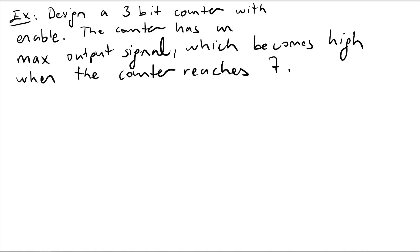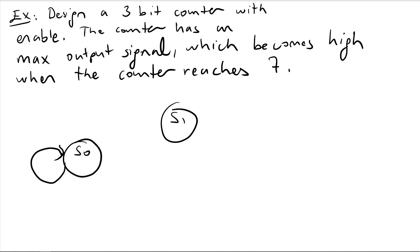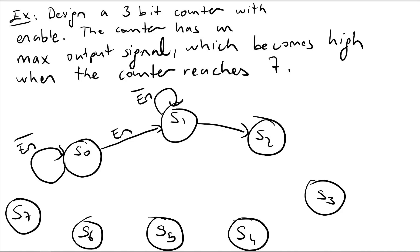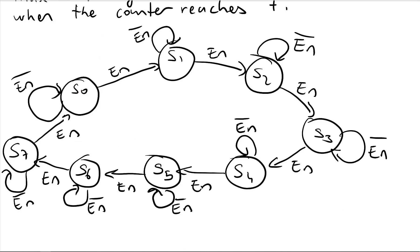Let's draw the state diagram. We have state s0 and s1. I have an enable signal — if I start from s0, if the enable is 0 I go back to s0; if the enable is 1 I go to s1. We also have s2, s3, s4, s5, s6, and s7. In all of these states, if the enable is 0 we stay on that state; if the enable is 1 we go to the next state. For the Mealy output, when going from s6 to s7 with enable, max is 1; in all other cases max is 0.